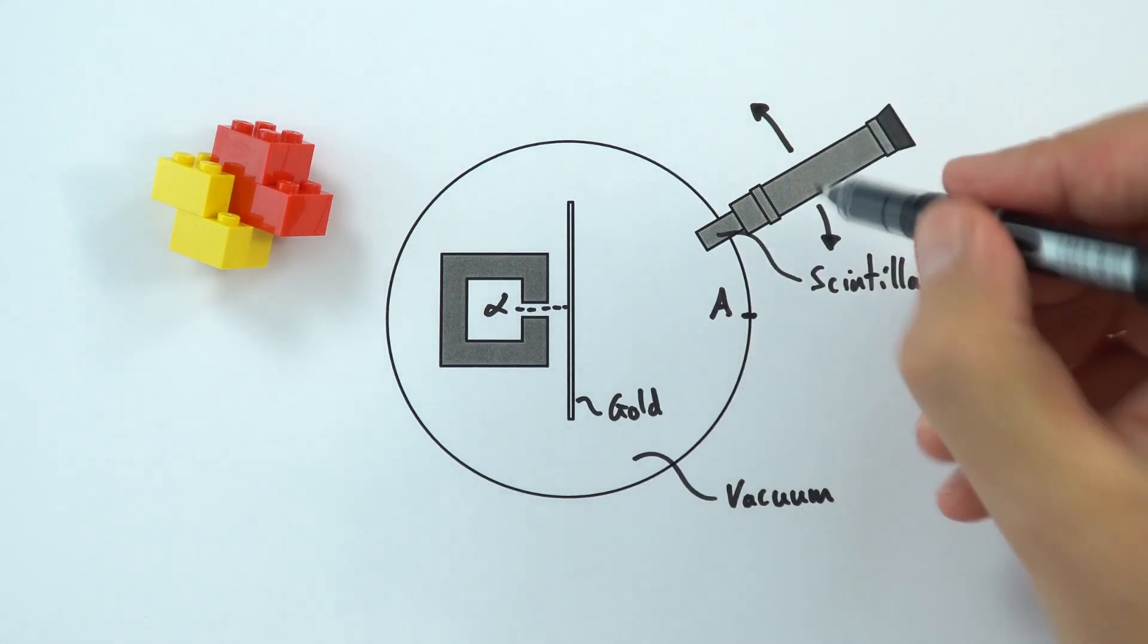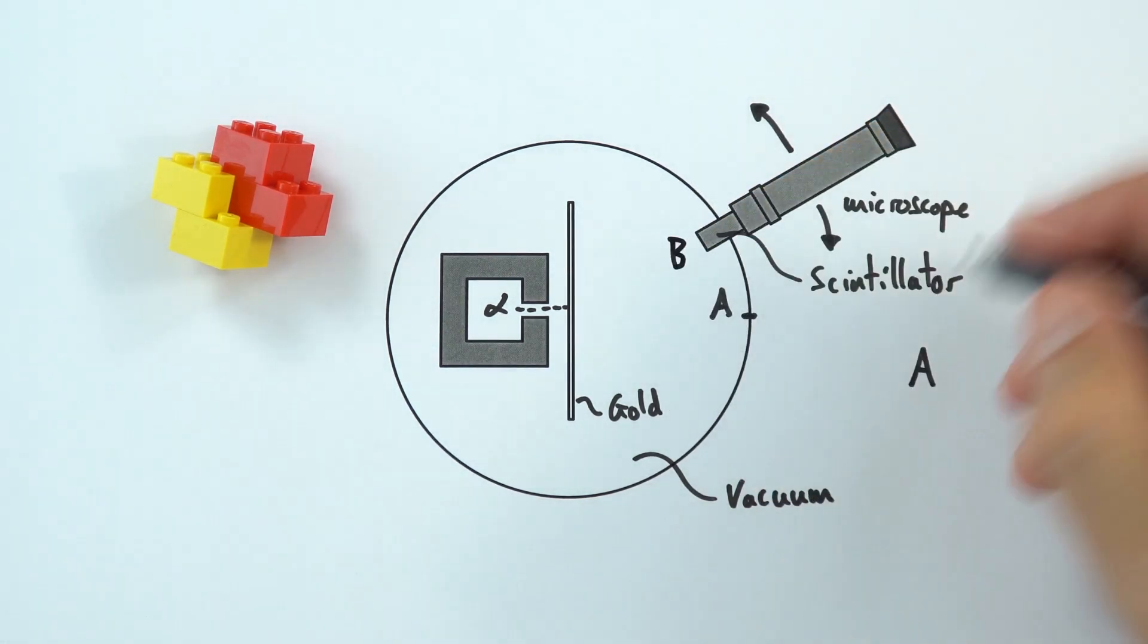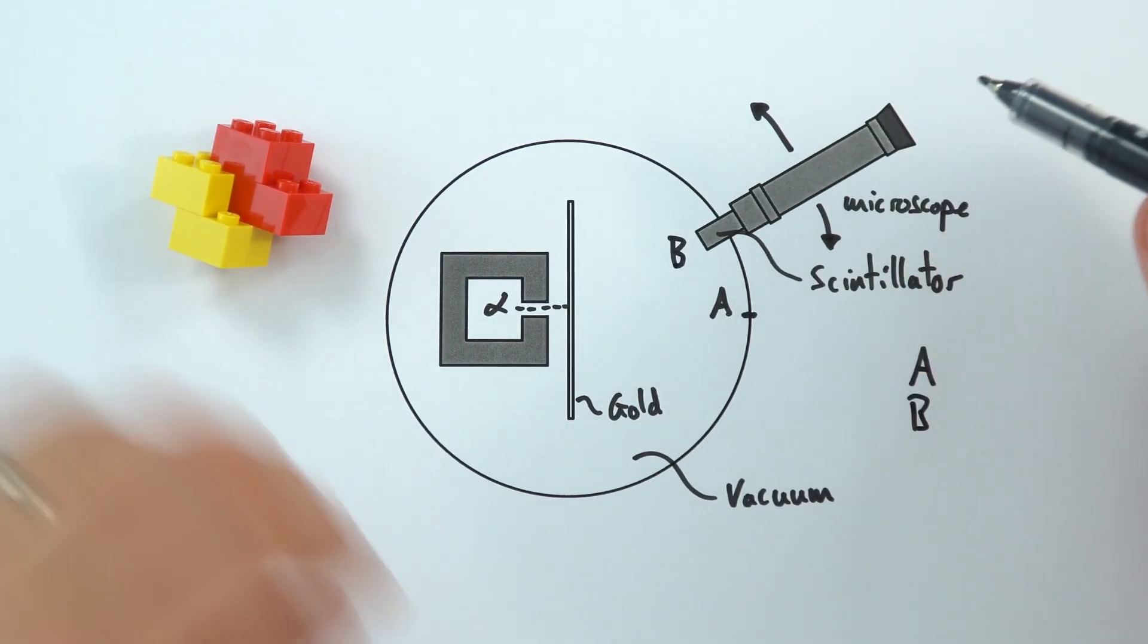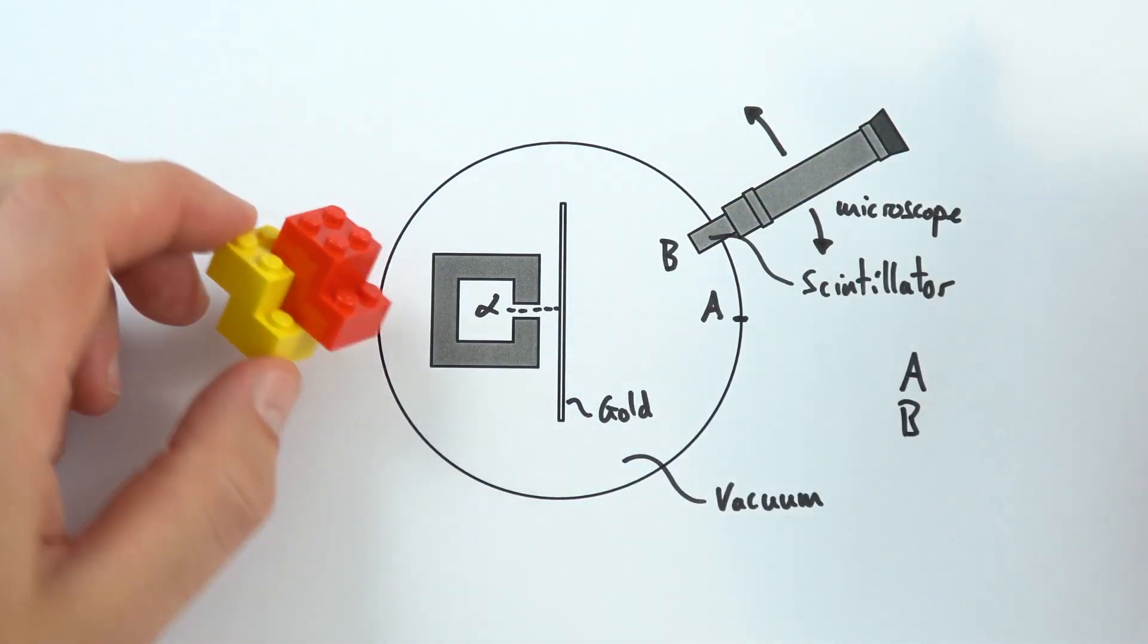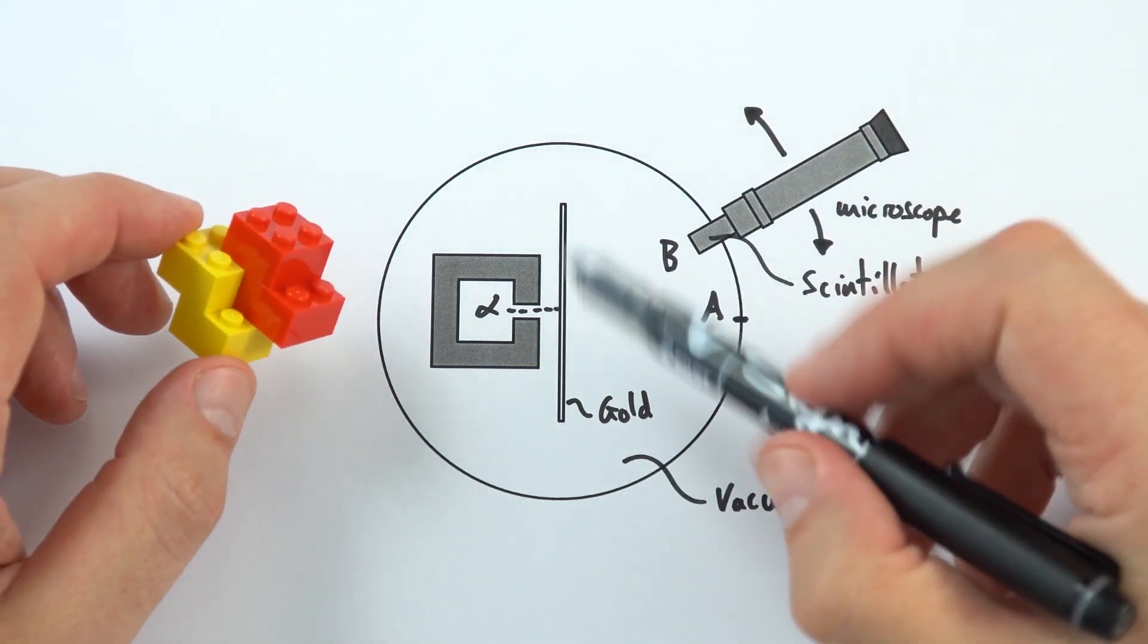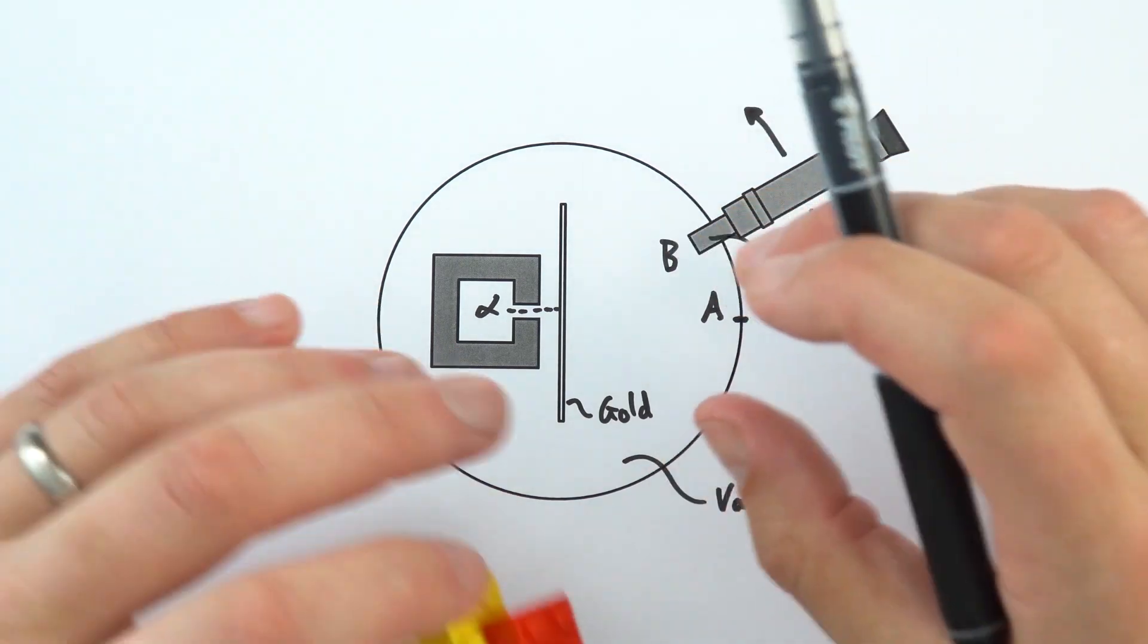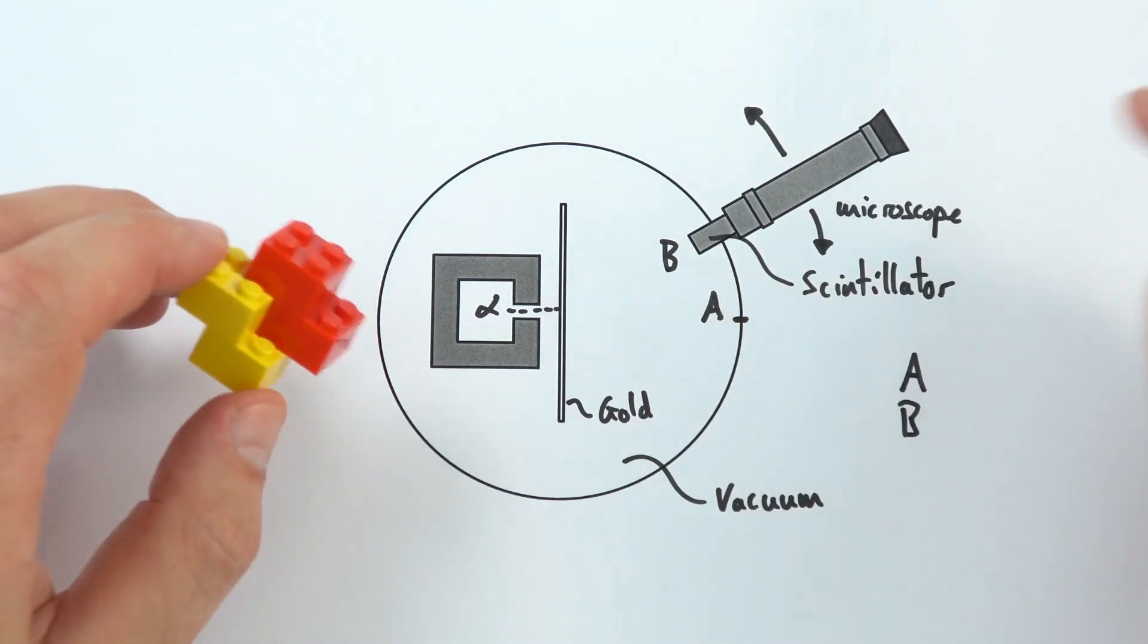What they then found was as they moved this around to different locations, for example location B where it is up here, they found that there was still some radiation getting that way. So some of these alpha particles had been deflected by the gold foil that we have here, by this gold leaf. And they thought okay that makes sense, maybe that there's something in the middle where we don't just have this distribution of negative and positive charges like in the plum pudding model, maybe there's a concentration of charge.